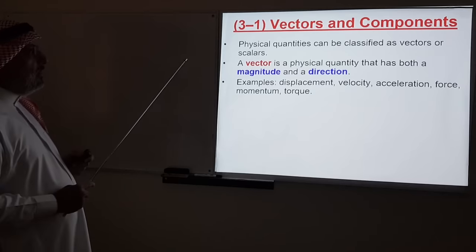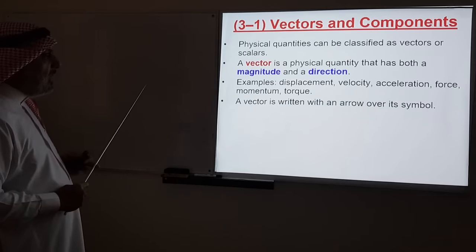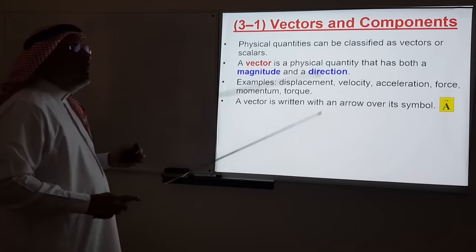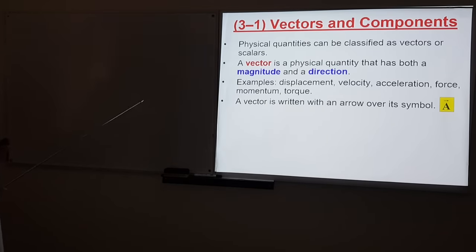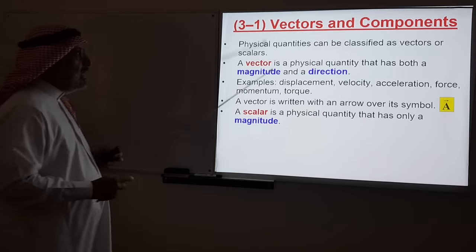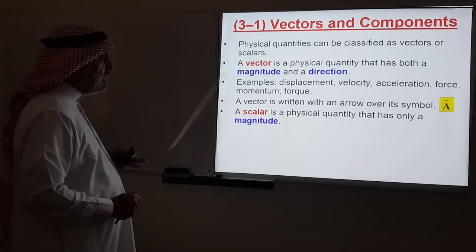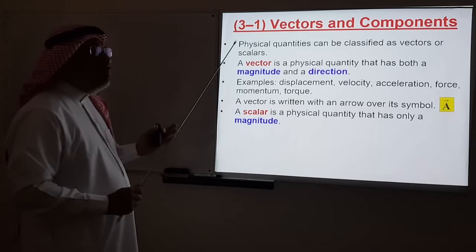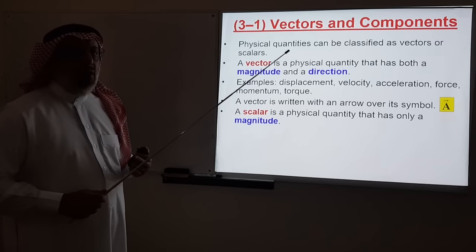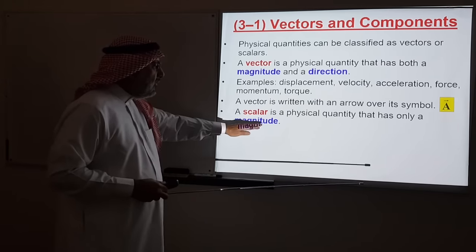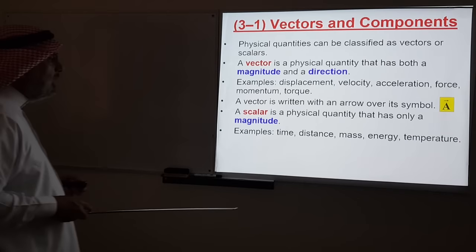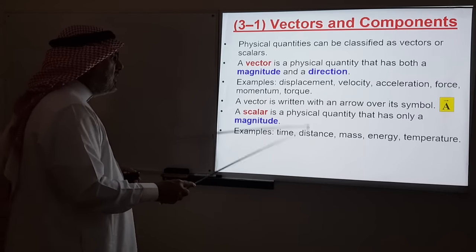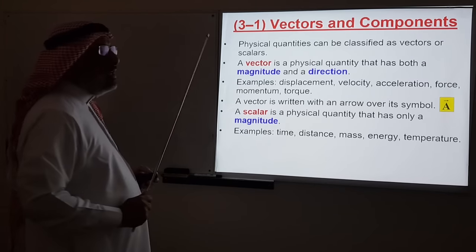These are vector quantities. A vector is usually written with an arrow over its symbol. A scalar — the second type of physical quantity — has only a magnitude, completely specified by giving its magnitude. Examples of scalar quantities include time, distance, mass, energy, and temperature.